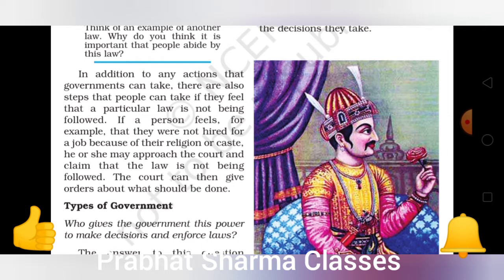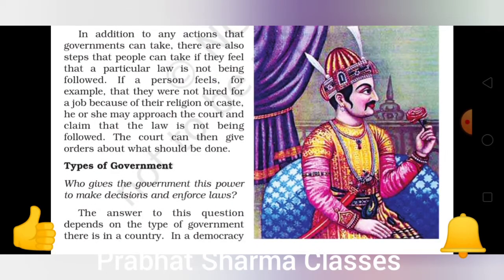Government is an association in which all people are working, and those people are elected persons — leaders who are elected by us. The question is: who gives the government this power to make decisions and enforce laws? How does government get this power to make decisions, and how do we follow them?